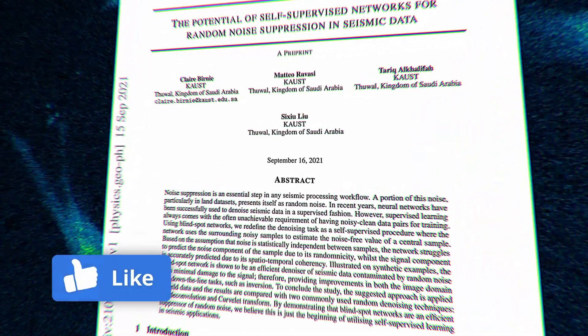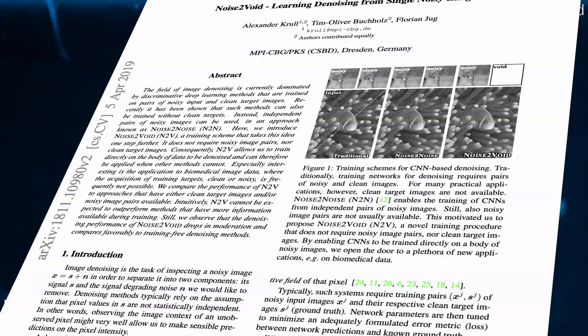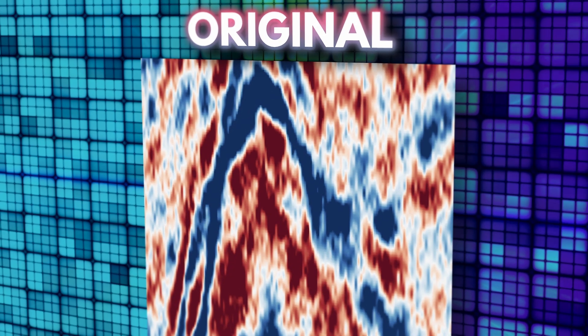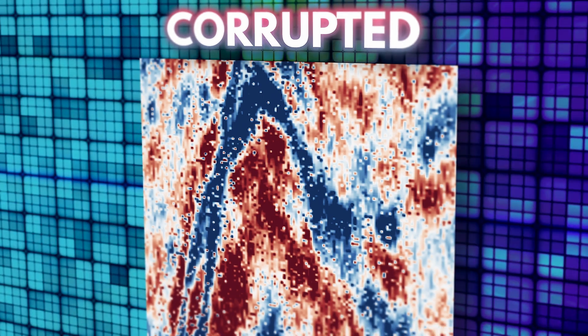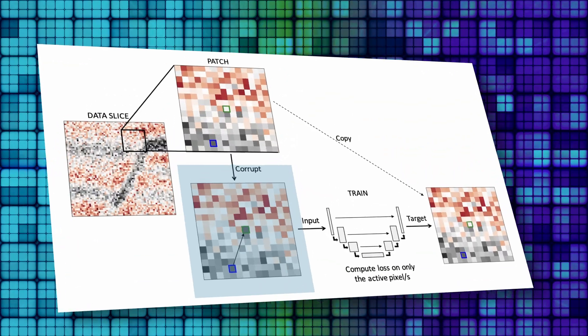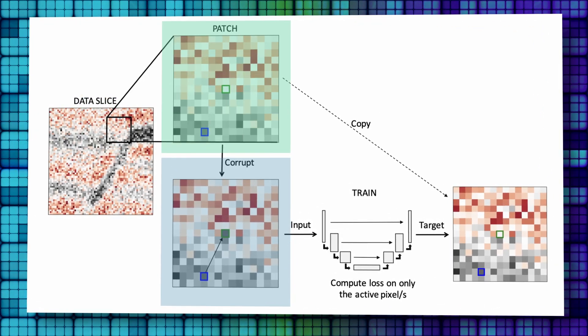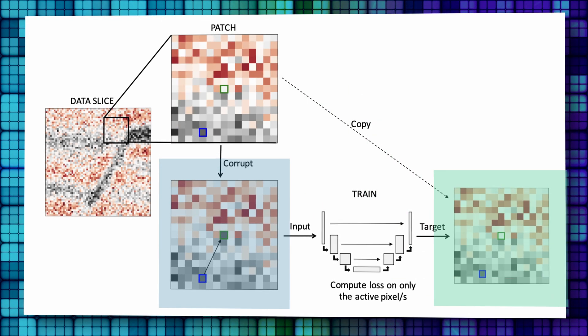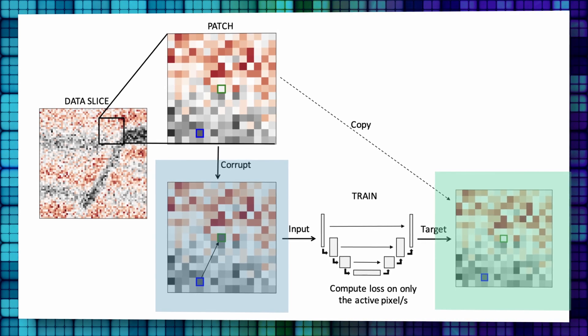To reduce random noise, the researchers employed a technique called Noise2Void, which is described in the original paper. It operates on patches of a single image, swapping out some of the pixels in each patch with pixels from the surrounding areas. This could be one pixel corruption or a percentage of the total number of pixels. The corrupted patches are fed into a neural network, while the original patches serve as target values, and the network attempts to recover the value of corrupted pixels by analysing the whole image.